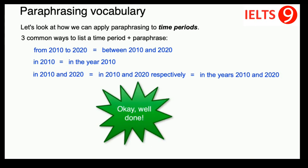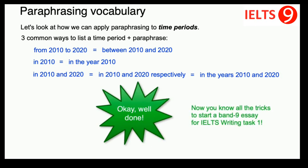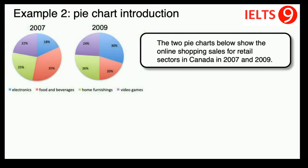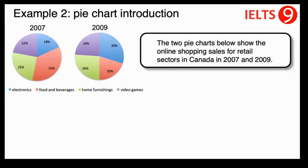Well done! Now you know all the tricks to start a Band 9 essay for IELTS Writing Task 1. To make sure that we remember all those techniques, let's go through one more example. Here is a second example of an IELTS Writing Task 1 question. In this task, you need to describe pie charts. Let's try to write an introduction for this task. As usual, we start by reading the question card: 'The two pie charts below show the online shopping sales for retail sectors in Canada in 2007 and 2009.'